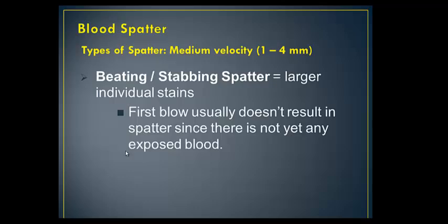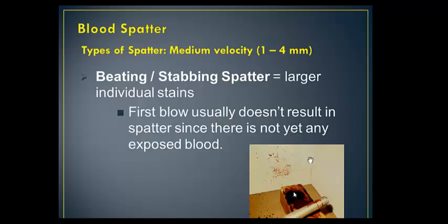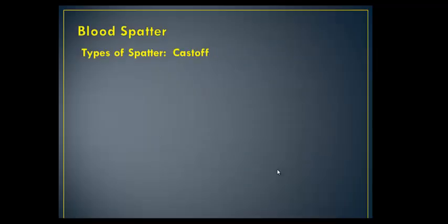They always say that the first blow is the freebie because there's no blood present. The first blow doesn't really result in spatter because no blood has been exposed. So it's usually the second, third, fourth, etc. where it starts making the spatter pattern. This is just a demo for lessons — they have a soaked foam of blood and a bat, and when they hit that, it will spatter and you've got larger dots here.